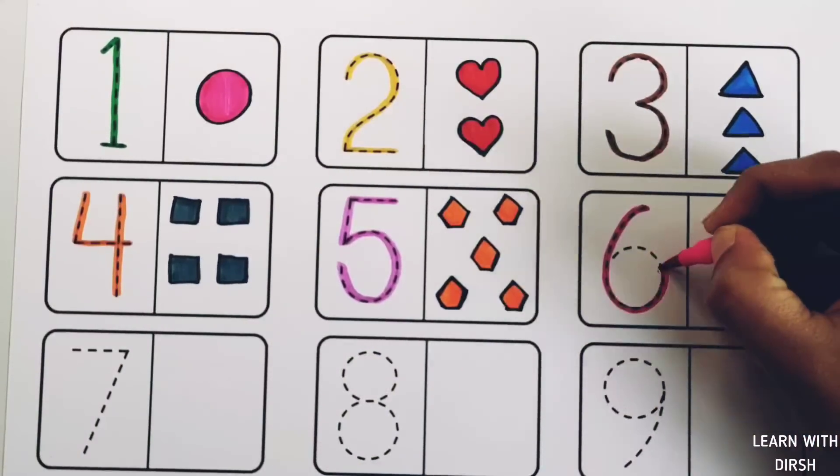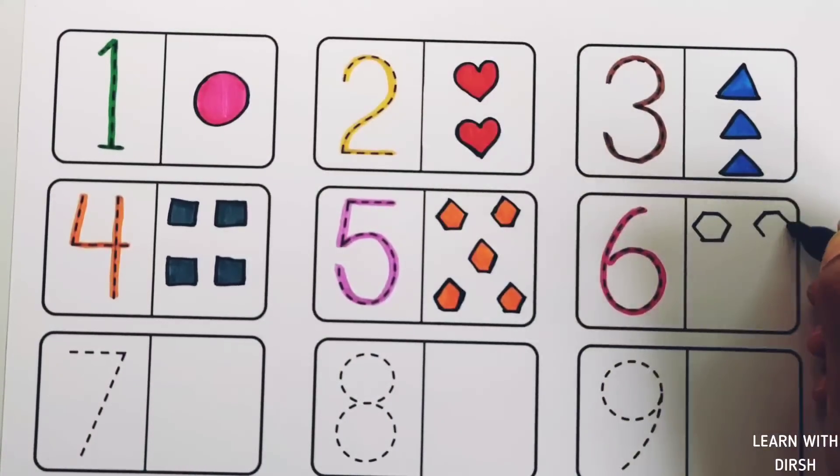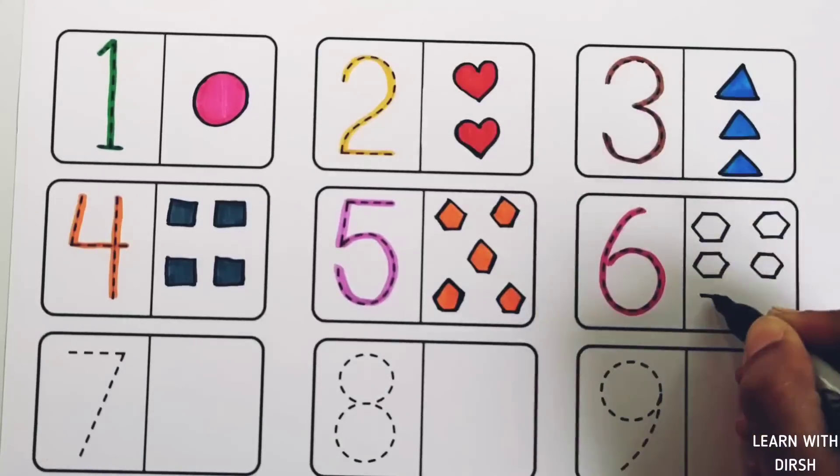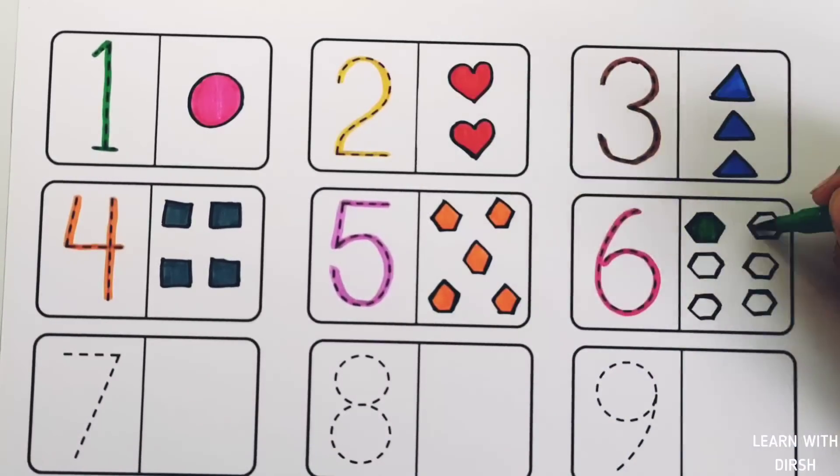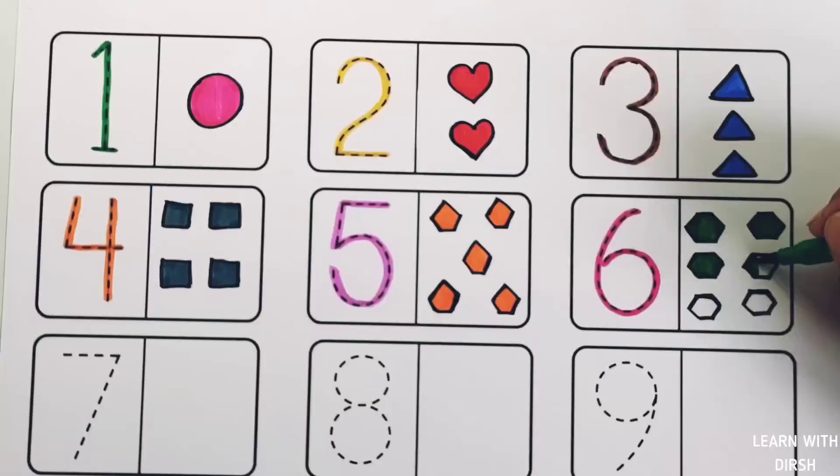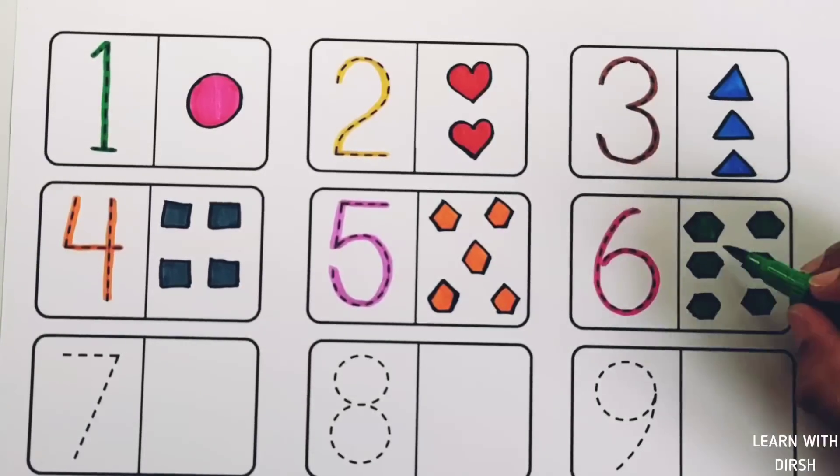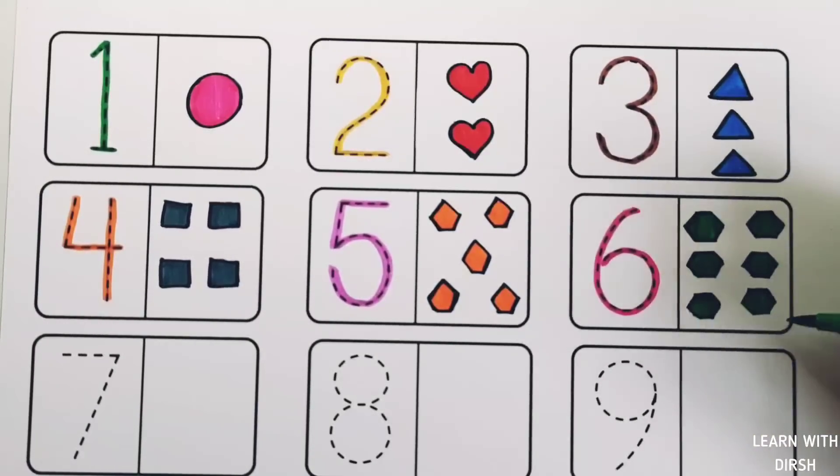Number six: six hexagons, green color. 1, 2, 3, 4, 5, 6. Six hexagons.